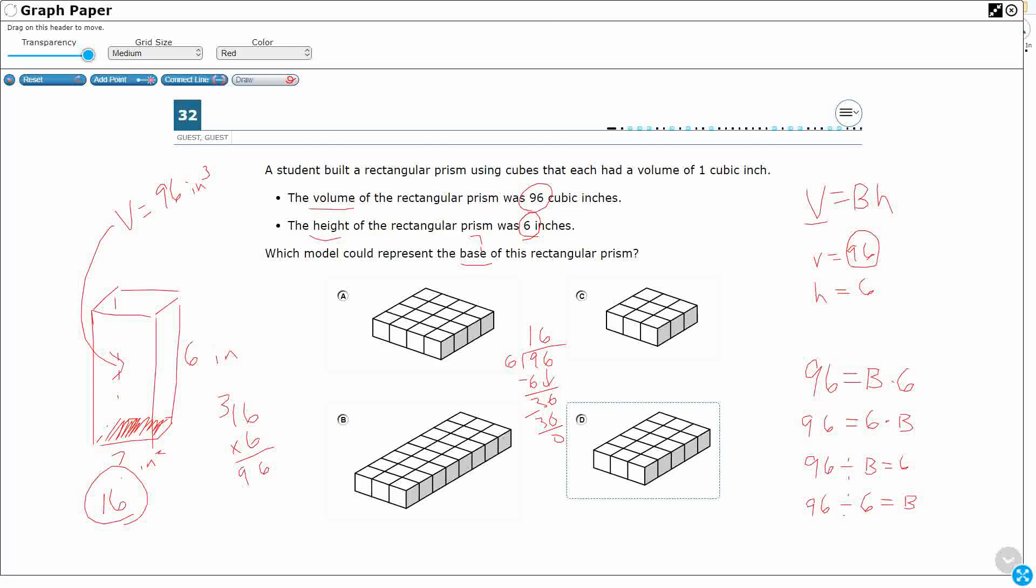So this is 1, 2, 3, 4 by 1, 2, 3, 4. 4 by 4. Yeah, that looks like that's going to equal 16. So A looks good.